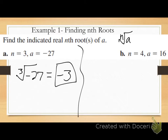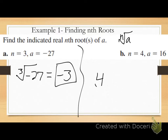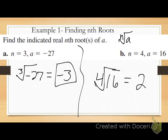For letter B, n equals 4 and a equals 16, so we're finding the fourth root of 16. My index is 4, which is even, and my a value is greater than zero, so I have two real nth roots. What number to the fourth power gives me 16? Two — and also negative two — since negative 2 to the fourth power also gives positive 16. So the answer is plus or minus 2.